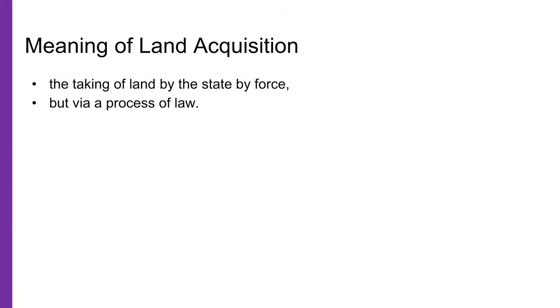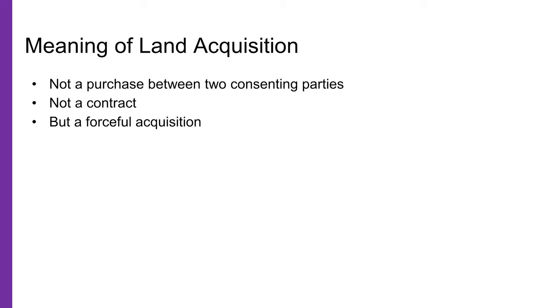What is land acquisition? What kind of law does it use and what are the concepts behind it? Land acquisition essentially means the taking of land by the state by force, but via a process of law. The owner of land does not have a choice and must give up the land once the process is complete. It is not a situation where the state is buying land from a person — not a contract between two consenting parties — but a forceful acquisition by the state.